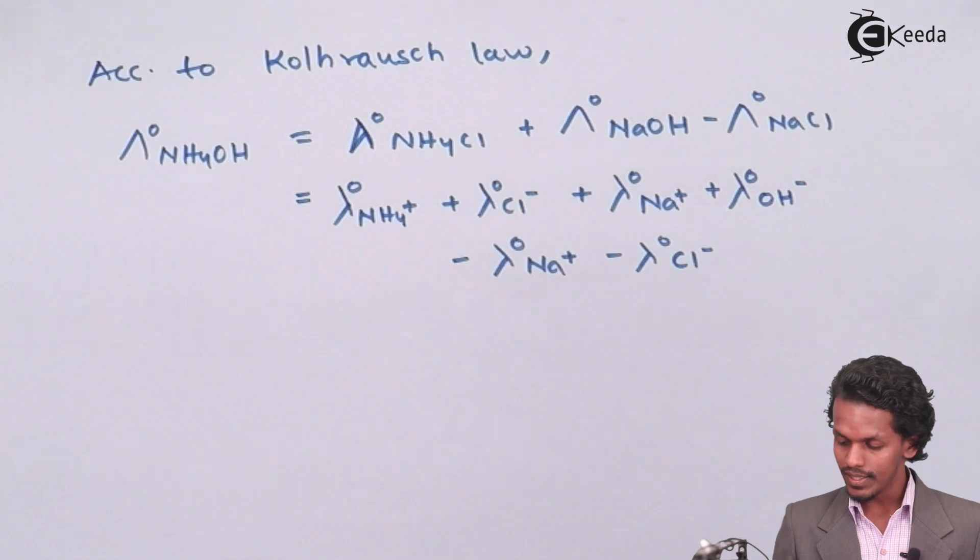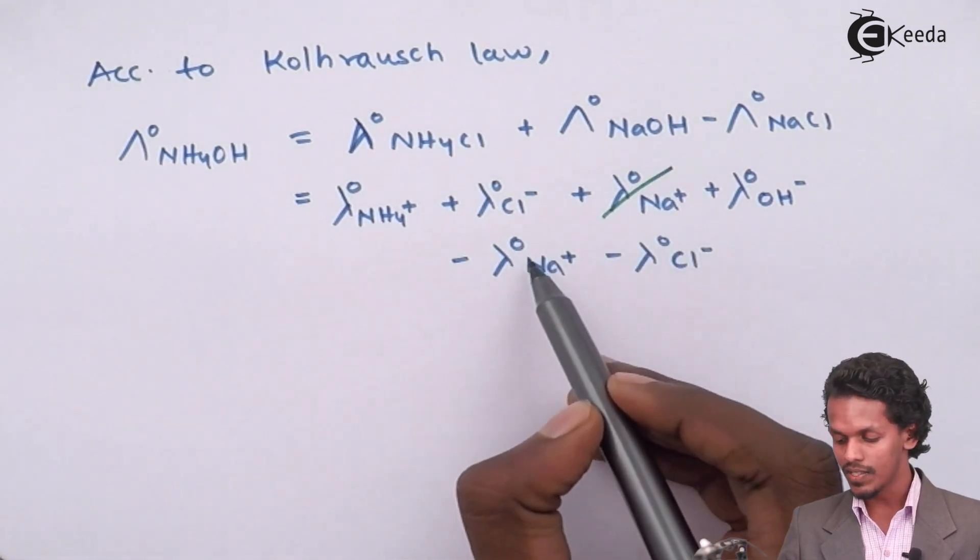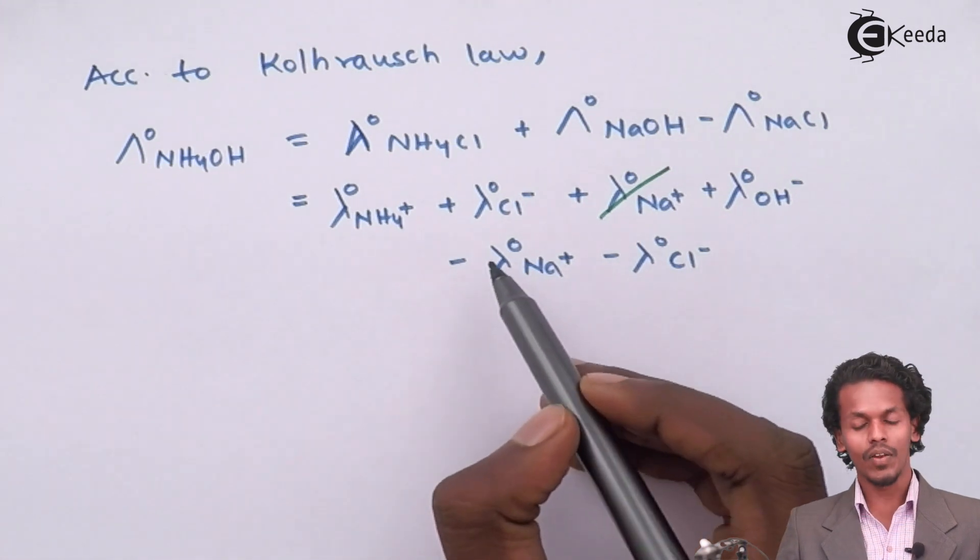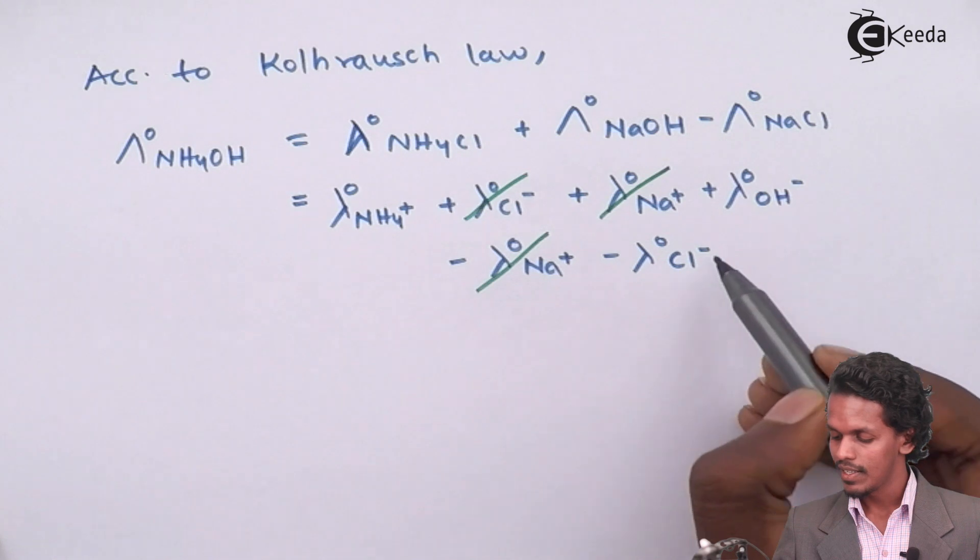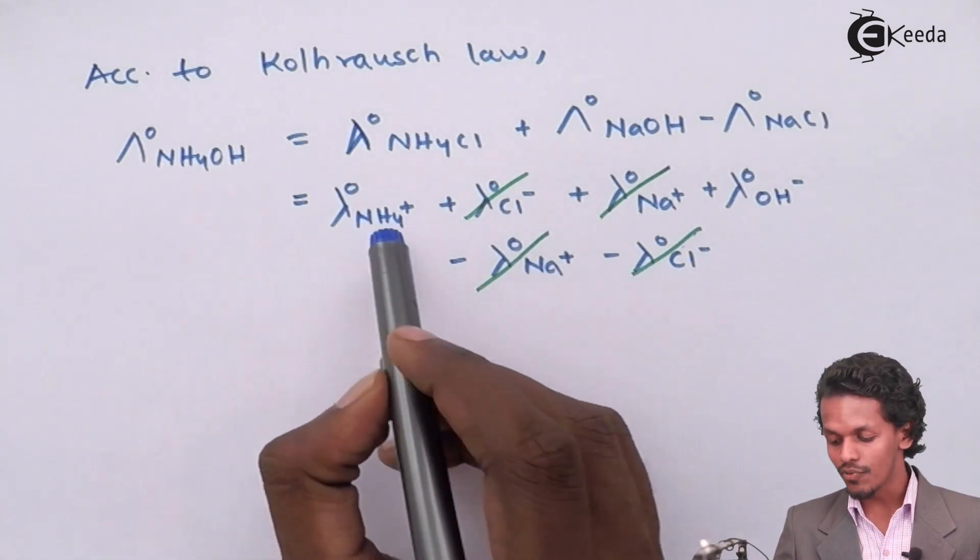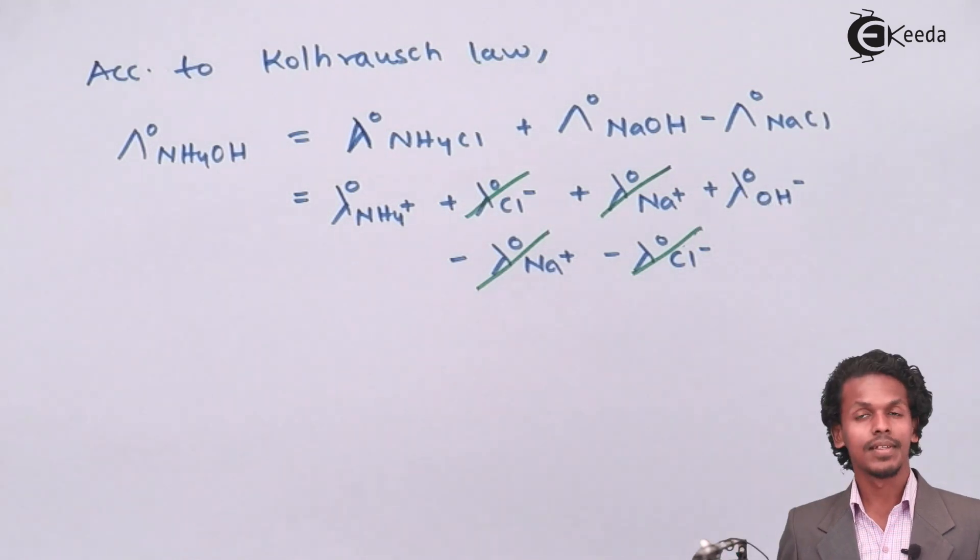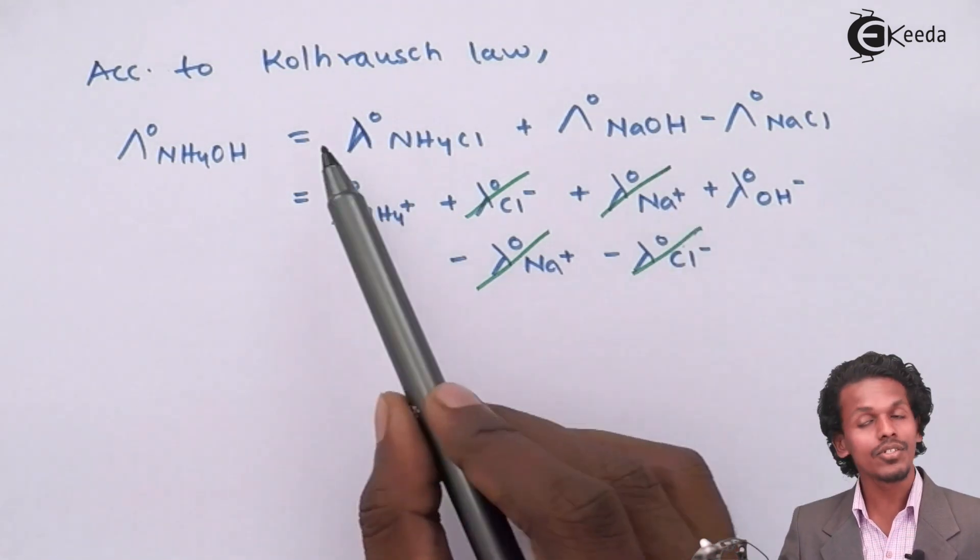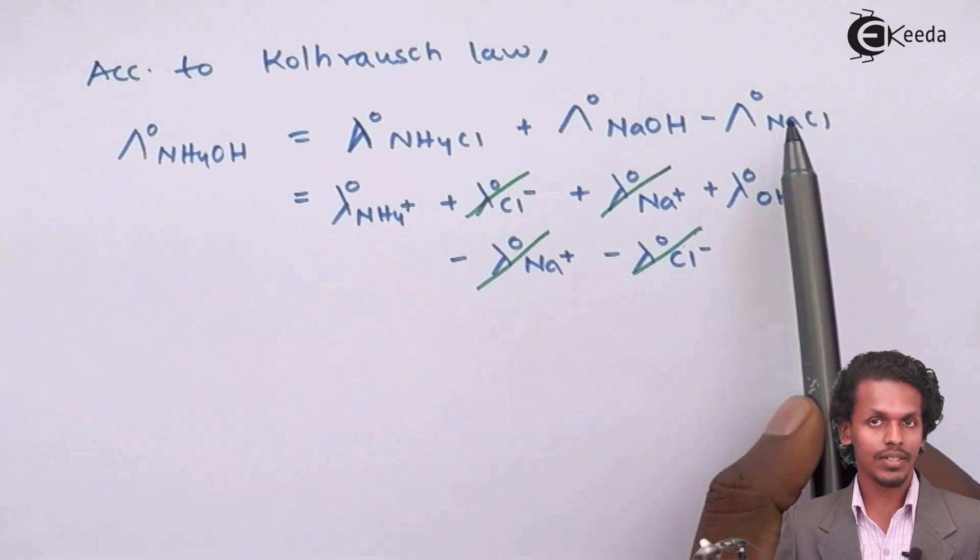From this, what I have got to know is that this Na+ which is positive and this Na+ which is negative will both cancel out each other. While Cl- and Cl- will also cancel out each other. So the thing that is left with me is NH4+ and OH-. This shows a clear indication that we have to add these two molar conductivities while we subtract NaCl.